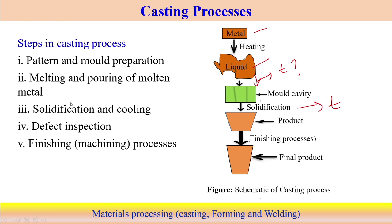These are the very basic steps in the casting process. Looking at the steps point-by-point: first is pattern formation and mold preparation. The pattern is basically exactly the shape of the component we are looking for, and the mold is a kind of cavity whose shape is equivalent to the pattern. Once that is done, we melt the material and pour the molten metal into the mold cavity. When we put the metal into the mold cavity, solidification follows, and further cooling to ambient temperature follows. Once it is done, we follow defect inspection for the component — to identify whether there is any defect or not. When that is done, we follow the finishing process — mainly machining operations to improve the surface appearance, surface finish, or aesthetic part of this component. These are the basic steps following the casting process, after which we get the particular component.